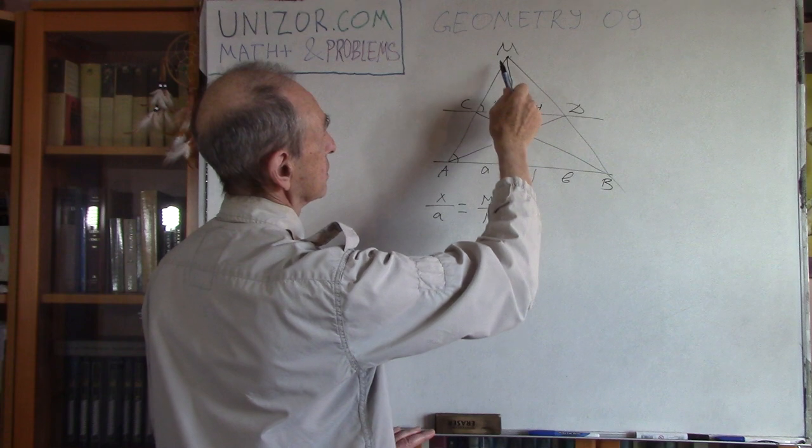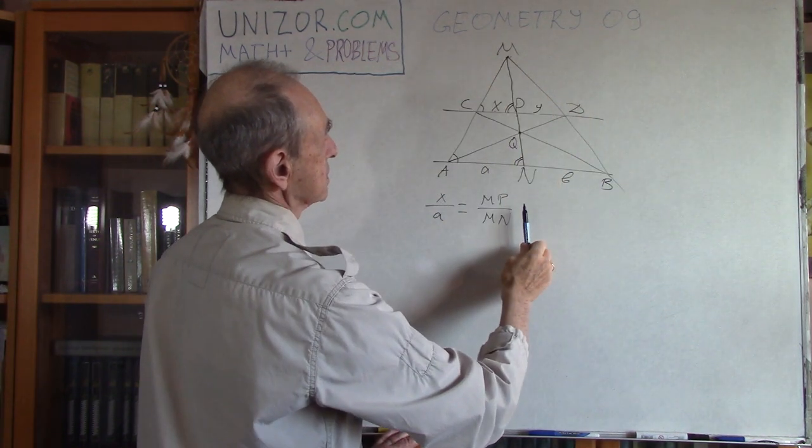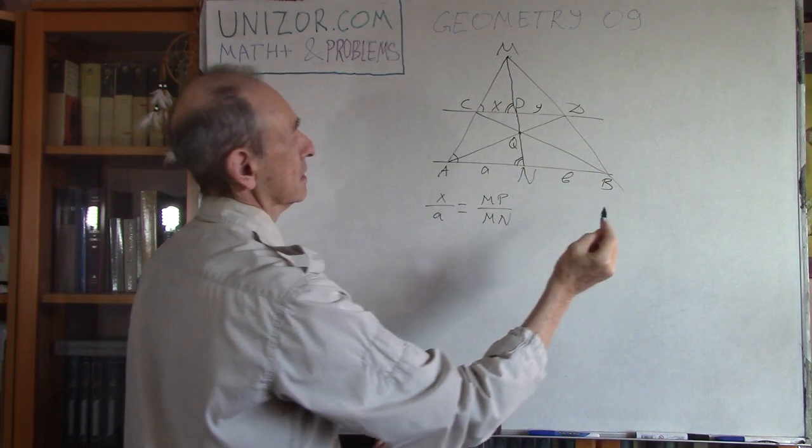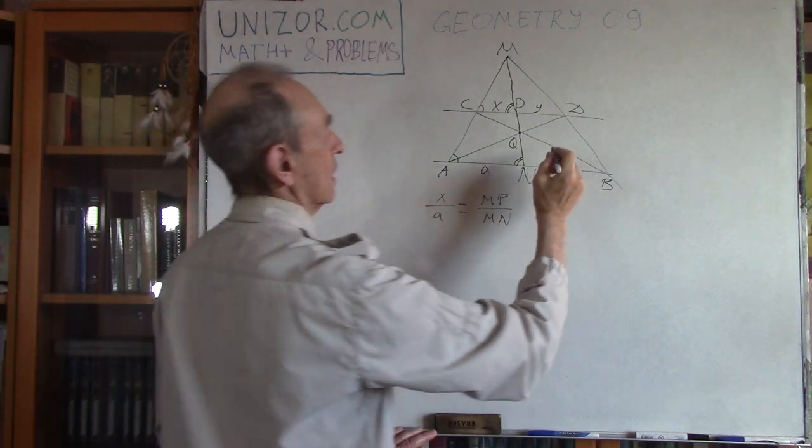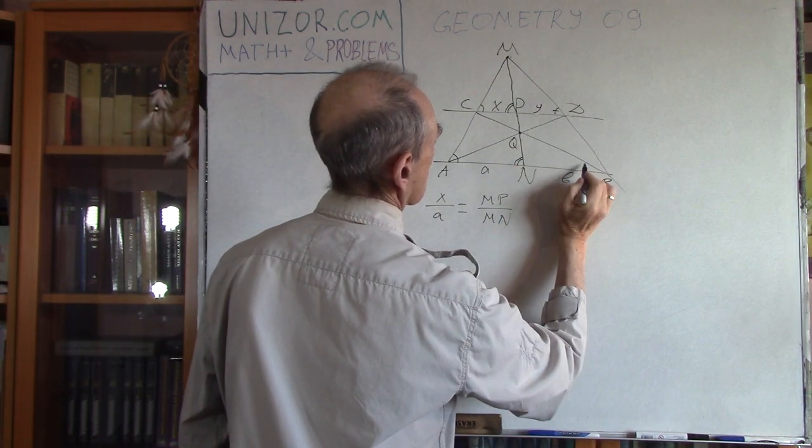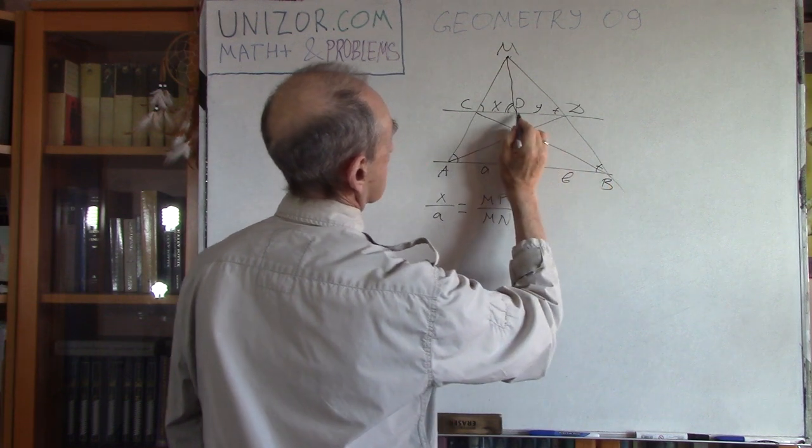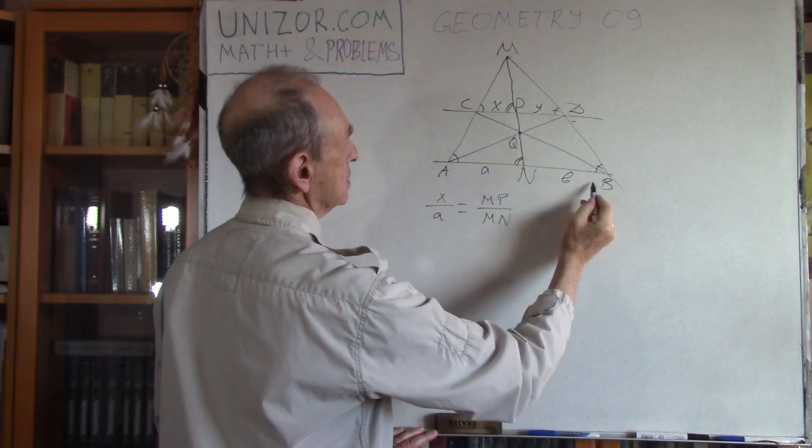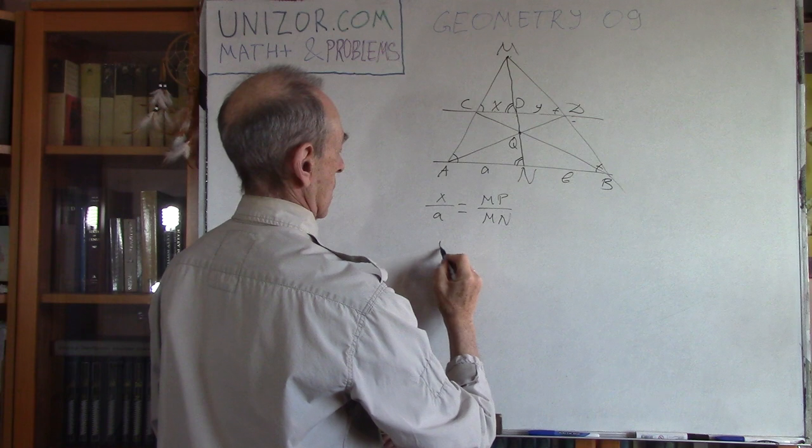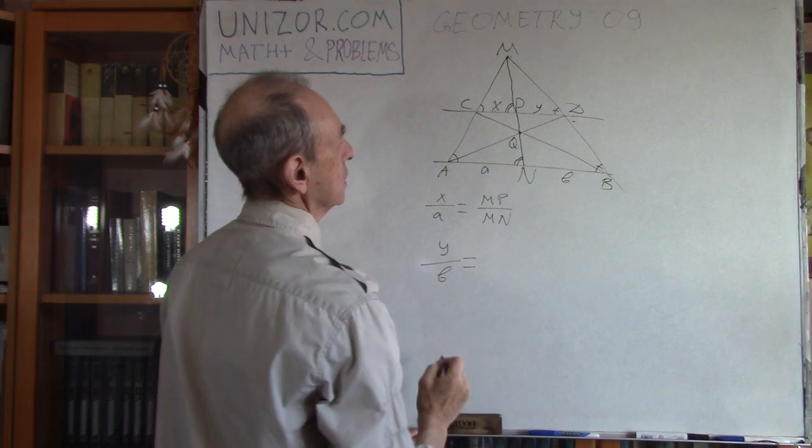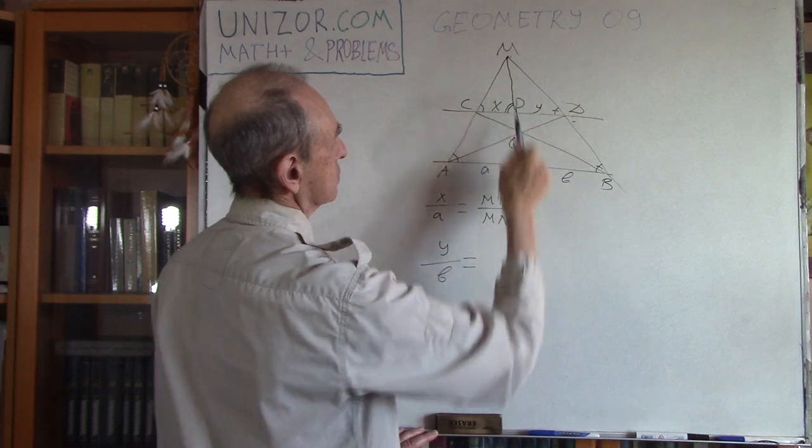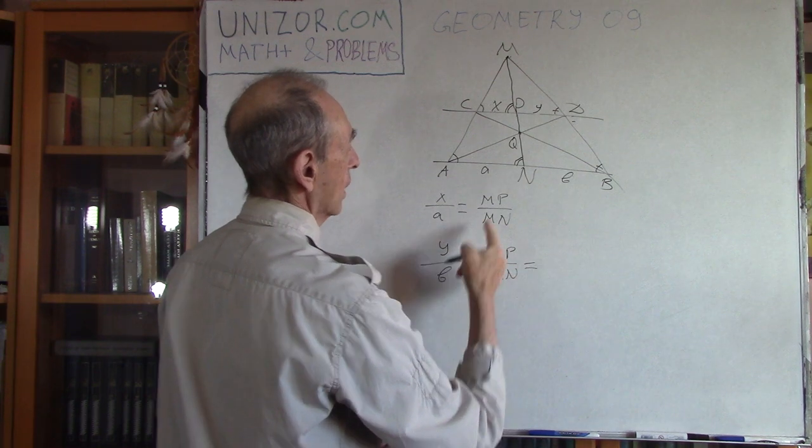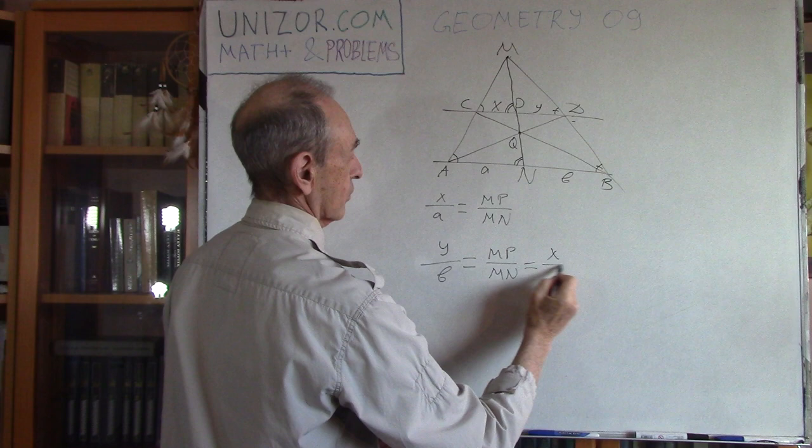Similarly, let's consider triangles on the right side of this MN line: MPD and MNB. Exactly the same story, exactly the same angles. So Y to B is as MP to MN, the same thing.